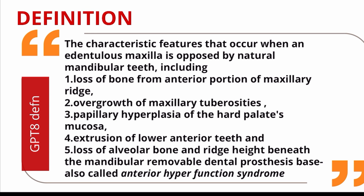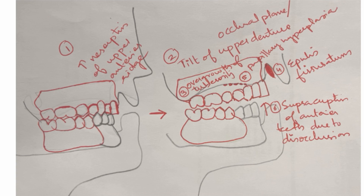Once you learn the sequence of events or the features of the syndrome, the definition will be easy. Here is a small diagram to help you understand better. As you can see, there is an upper complete denture and a lower distal extension RPD. Since the patient has only a few anterior teeth, there is a natural tendency for the patient to bite using these anterior teeth, concentrating the occlusal load in the anterior region as it is the only natural teeth in their mouth.